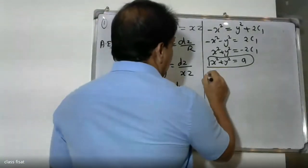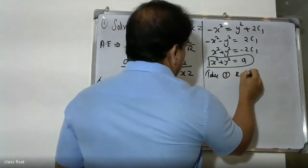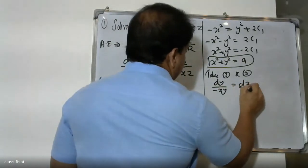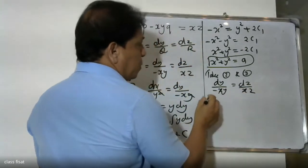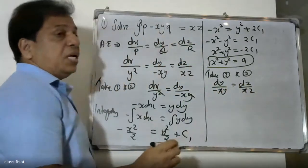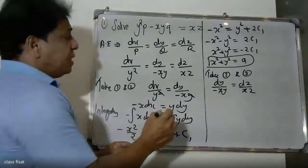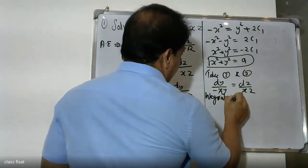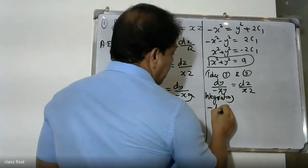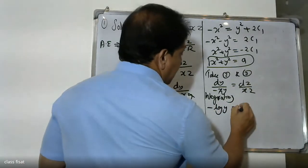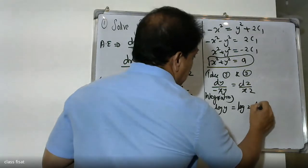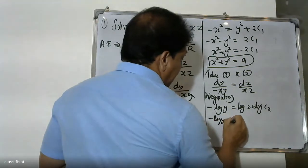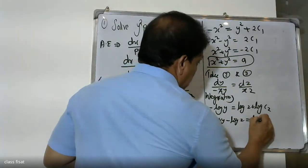Now take the second ratio and third ratio. We have dy by minus xy equals dz by x. The x terms cancel, giving dy by y equals dz by z. Separating variables and integrating both sides.